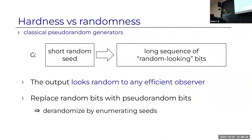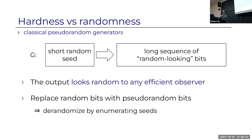The classical paradigm talks about PRGs. A PRG is an efficient algorithm that takes a short, truly random seed and stretches it to a long sequence of bits that is pseudorandom—meaning it's resilient against any efficient observer, including ones we haven't thought about. This is the modern notion of PRGs. In the context of derandomization, it allows us to replace random bits with pseudorandom bits, effectively shrinking the number of truly random bits needed from the length of the random string to the length of the seed.